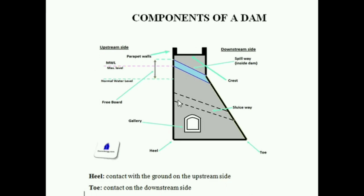This is called a sluiceway or penstock. It helps in power generation. A sluiceway is an opening or pipe in the dam structure from the upstream side to the downstream side. The water stored in the reservoir is allowed to flow from the upstream side to the downstream side through this pipe under pressure, so that the force exerted by this water helps in power generation.